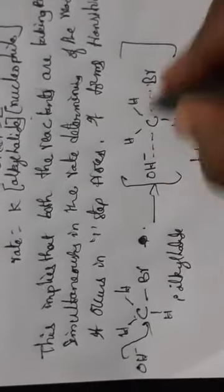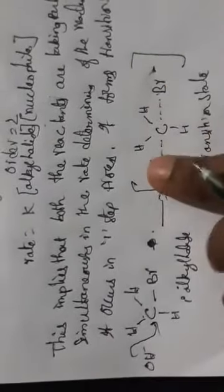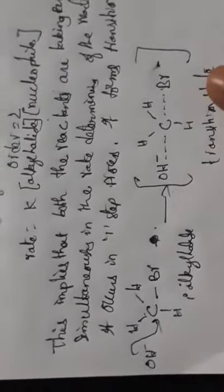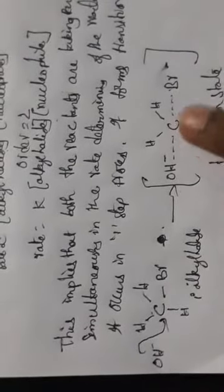In the transition state, the carbon is attacked by OH⁻ while it is still bonded to the halogen, so it momentarily has five bonds — which is an unstable arrangement, and no intermediate is formed. As OH forms a bond with carbon, at the same time the carbon-halogen bond weakens and breaks. Both events occur simultaneously, forming the transition state.